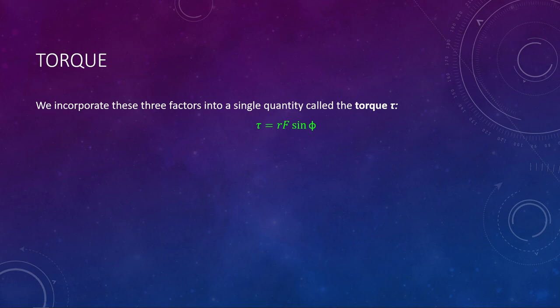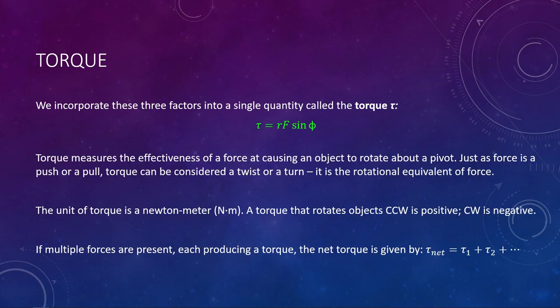We've been making analogies in previous lectures — position and angular position, velocity and angular velocity, acceleration and angular acceleration. We can make a parallel here as well: torque is the rotational equivalent of force. Just as force is a push or a pull on an object, torque can be thought of as a twist or a turn. You push or pull on something — that's a force. You twist or turn on something — that's a torque. A bigger torque means you are more efficient at causing rotation.